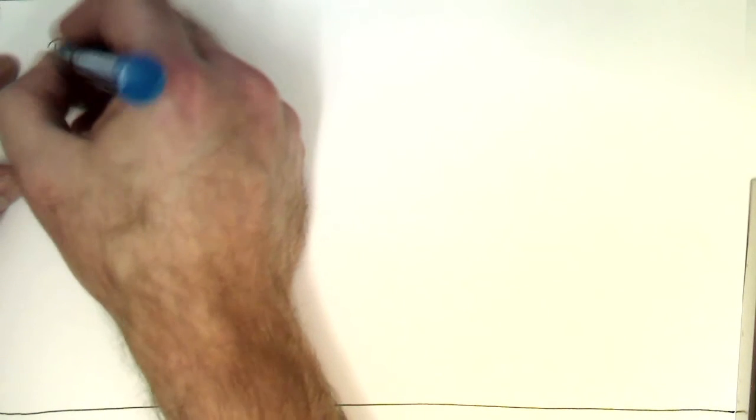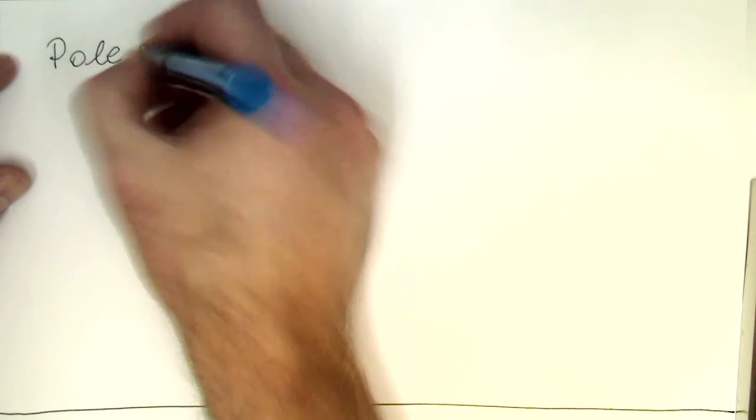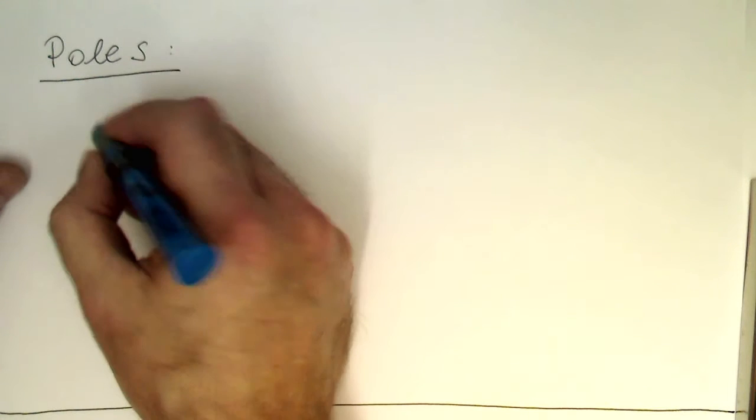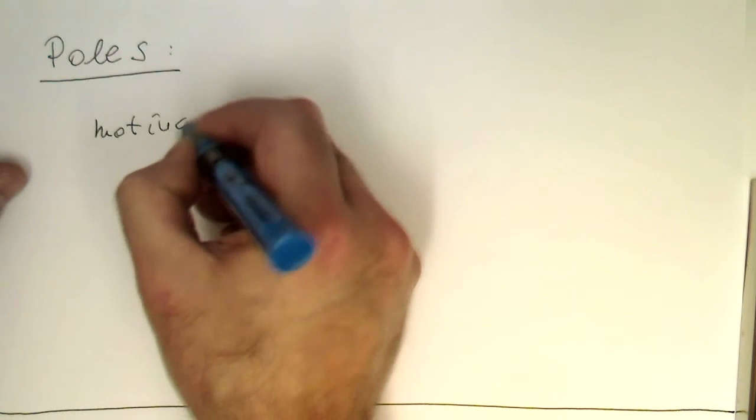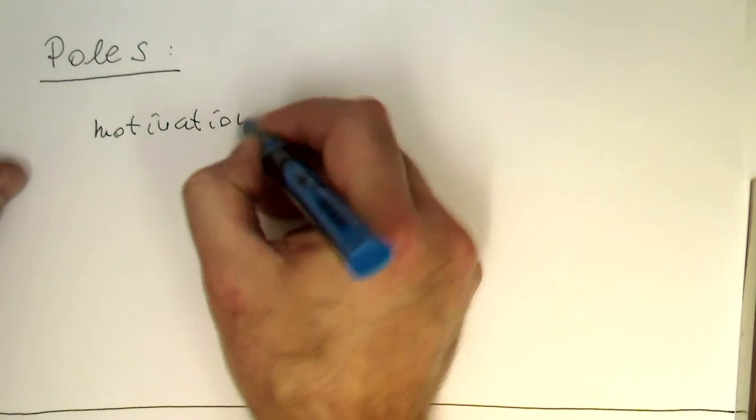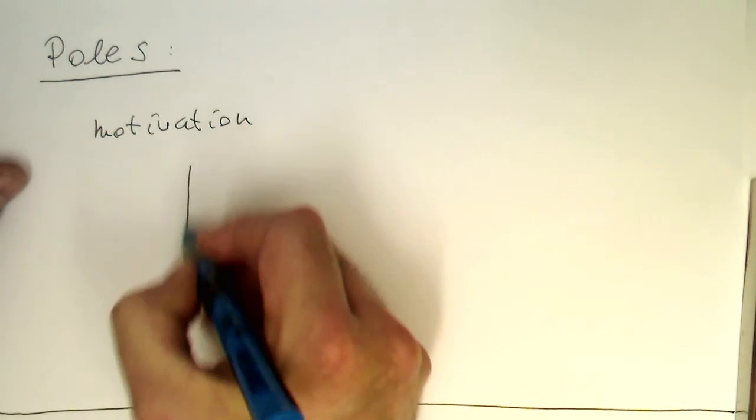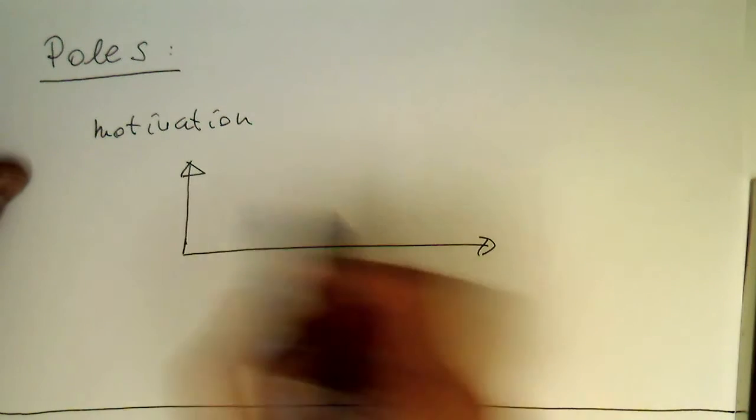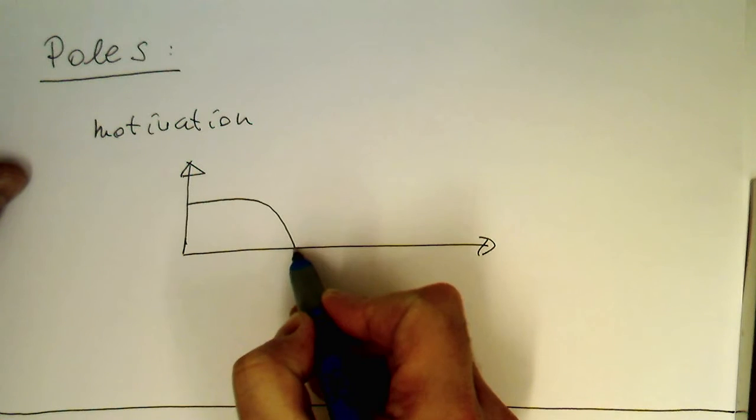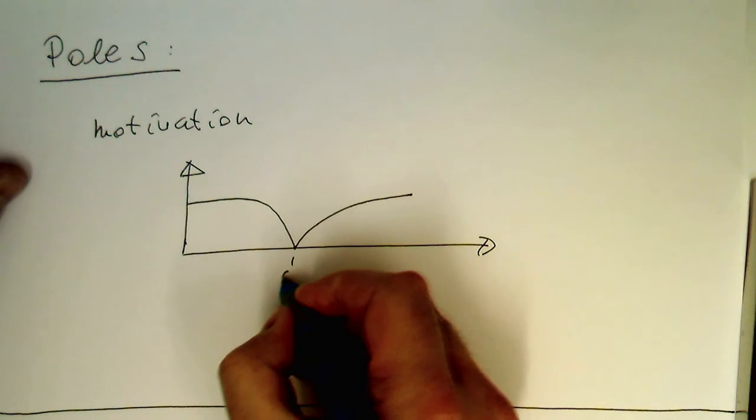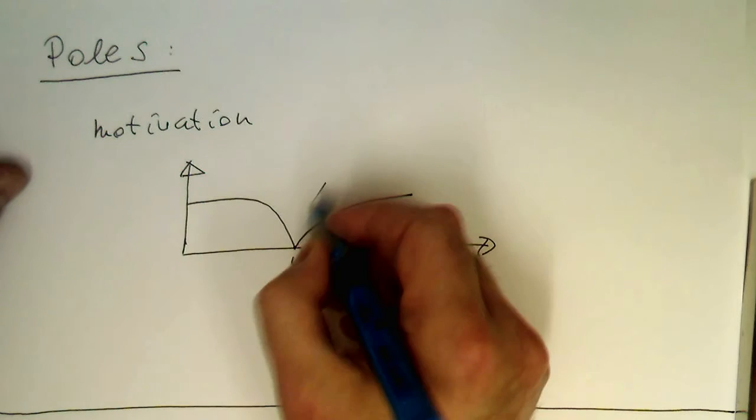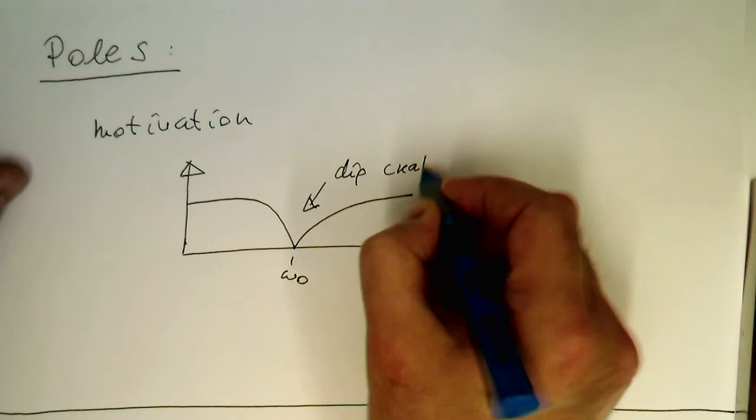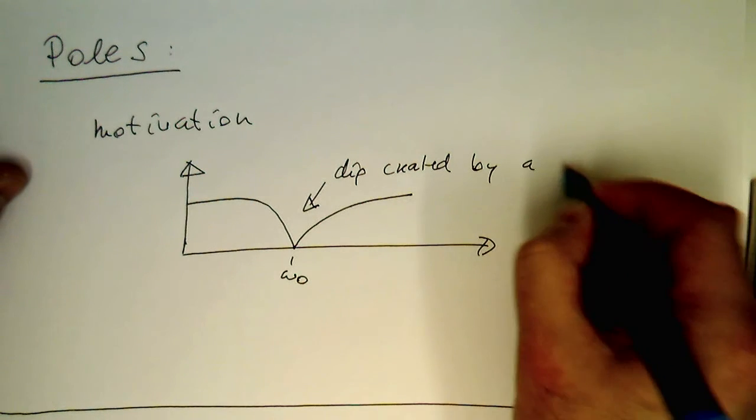So now the next step is poles. And as a motivation, why do we need poles? Let's have a look again at the frequency response of our zero. So the zero creates a very shallow dip here. That's the dip created by a zero.